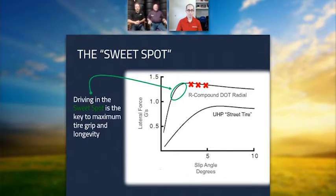That's why there's a variance in the life that some people get out of tires - it's how well they drive in that sweet spot as opposed to driving past the sweet spot.